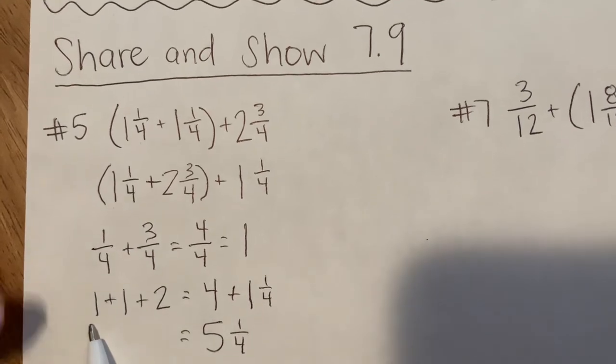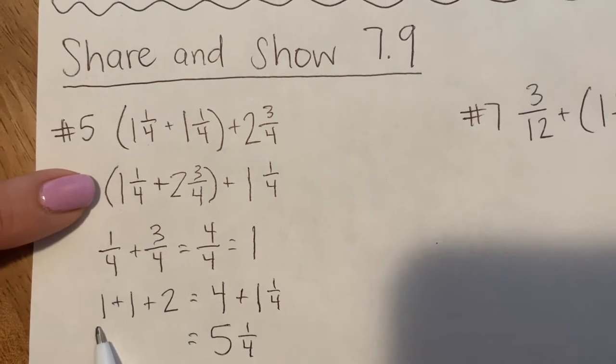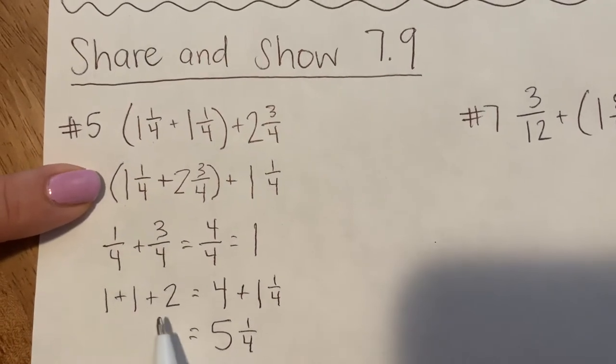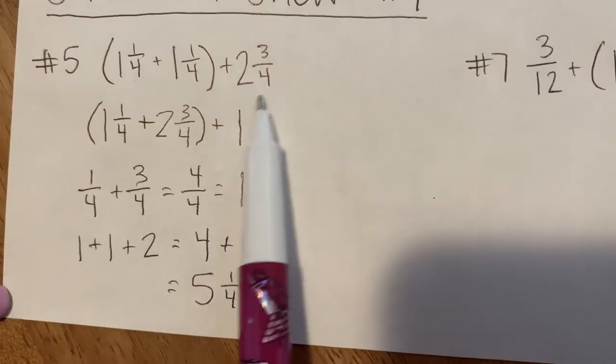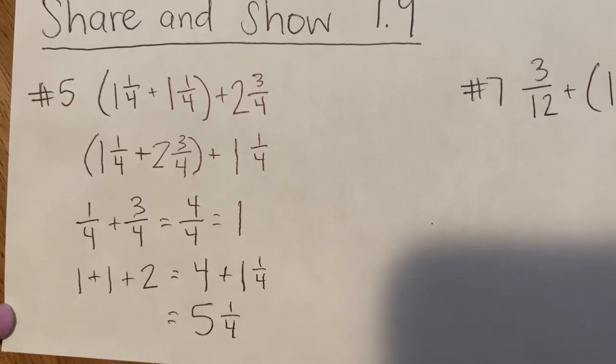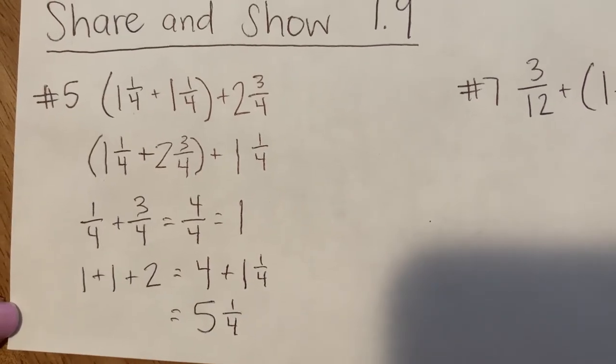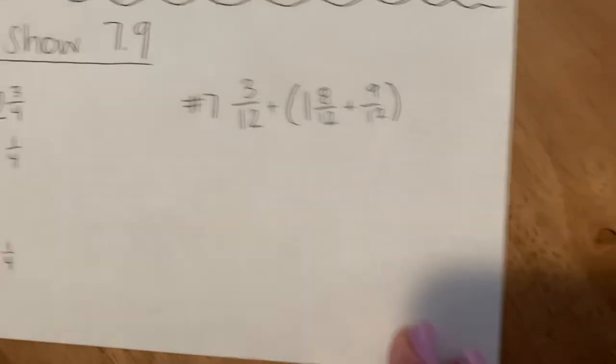I took that 1 and I added it to the other whole numbers that are inside this grouping. I added 1 plus 2 plus that 1, I got 4. And then I added that final mixed number, 4 plus 1 and 1 fourth equals 5 and 1 fourth. Let's check out number 7.